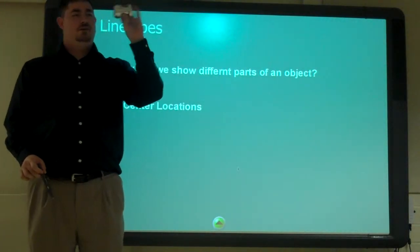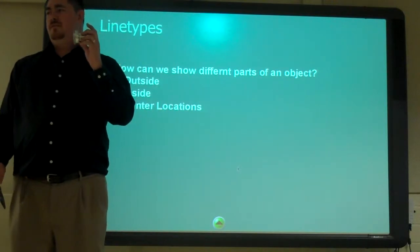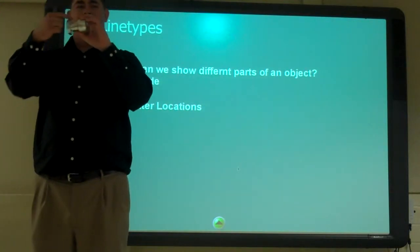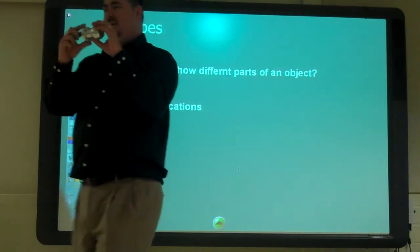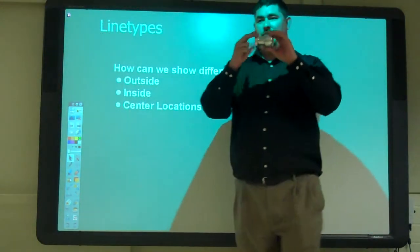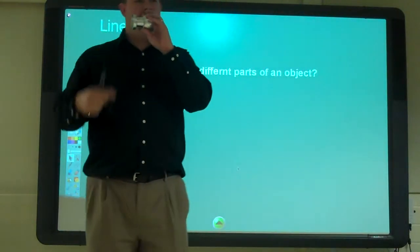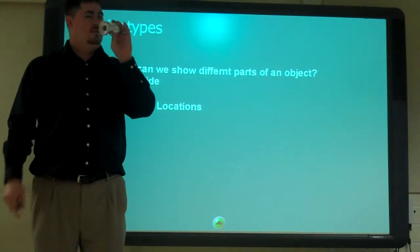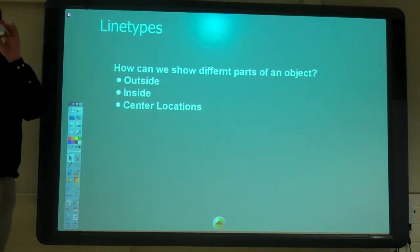How do you think we can tell those different things? If you were making up a new way to do it, how would you tell outside, inside, center? Cutaway? Yeah, we can do a cutaway. Dotted line? Yeah, we can do dot lines for the inside stuff. Change what the line looks like. Maybe color, but if you only got a pencil, you don't really have color. So we change the different line type and the thickness of our line.